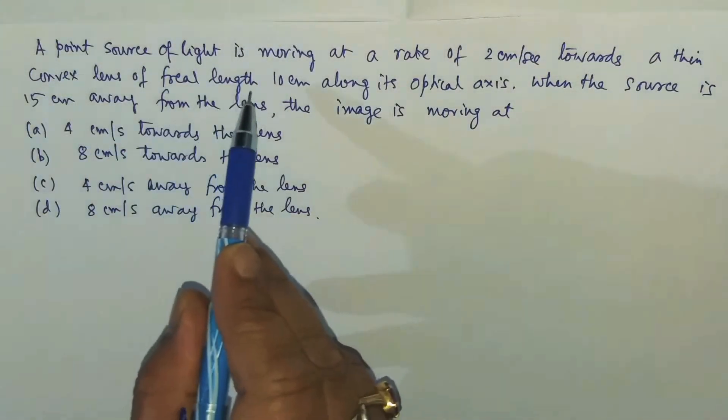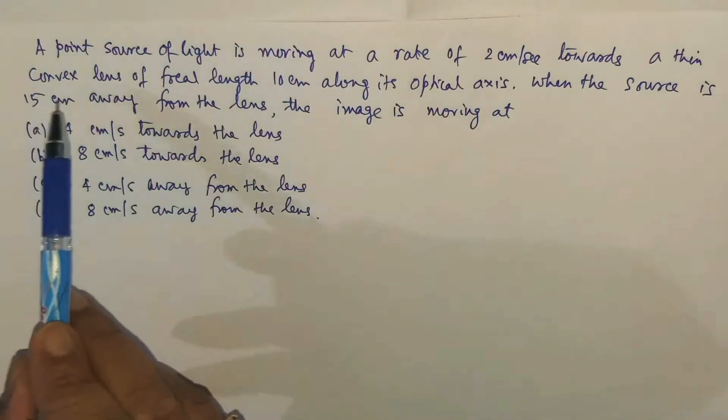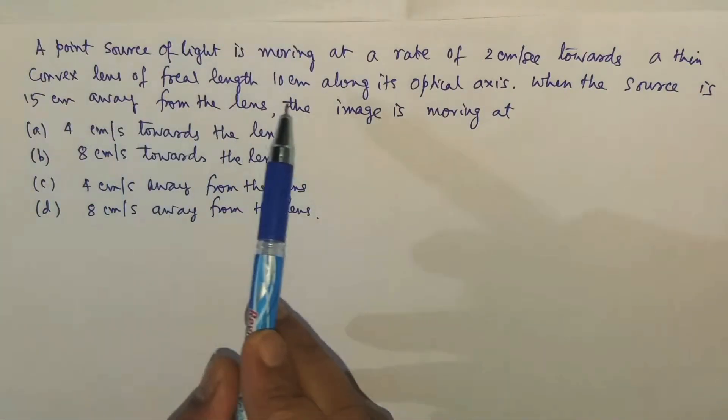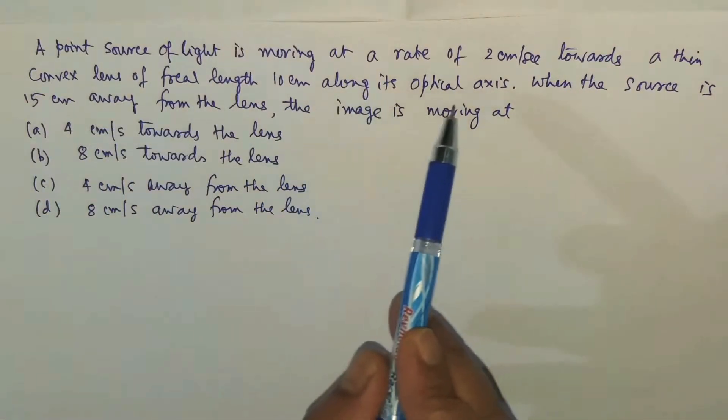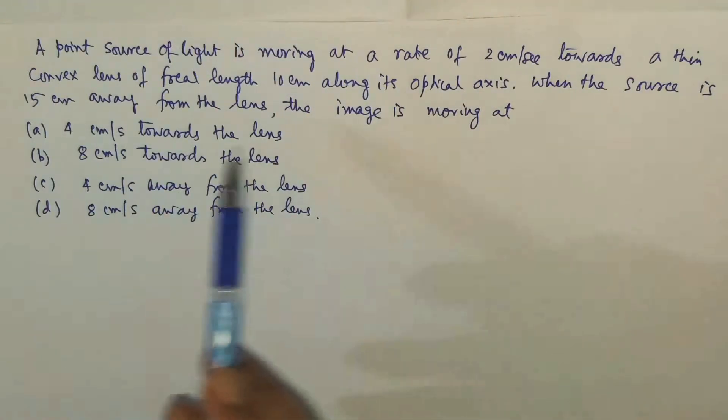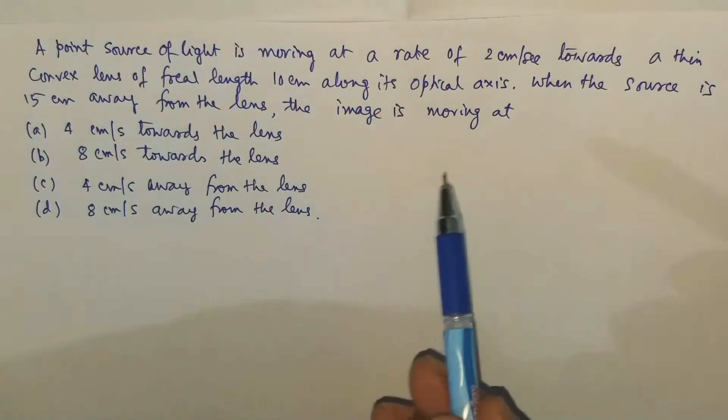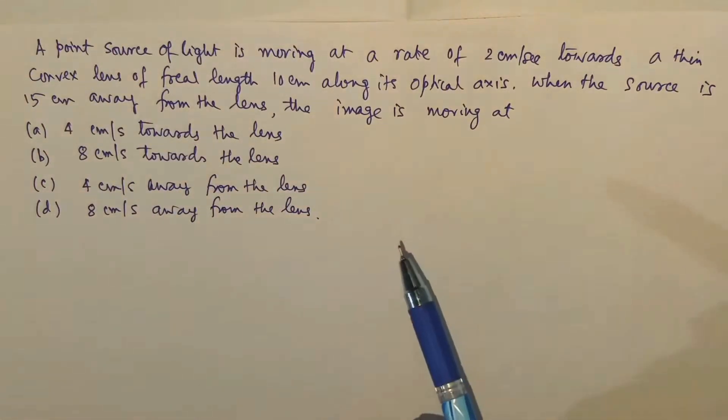A point source of light is moving at a rate of 2 cm per second towards a thin convex lens of focal length 10 cm along its optical axis, that means principal axis. When the source is 15 cm away from the lens, find the speed of the image, or rather the velocity of the image.